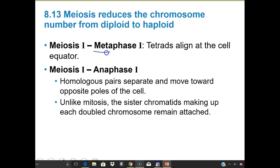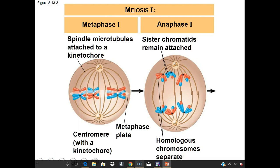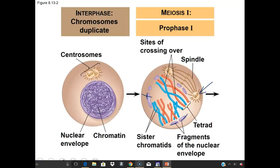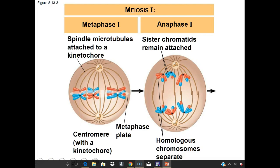In metaphase I, tetrads align at the cell equator. In anaphase I, homologous pairs separate and move towards opposite poles. Unlike mitosis, the sister chromatids making up each double chromosome remain attached. Notice that crossing over occurs between pairs of homologous chromosomes during prophase I, so by the time we reach metaphase and anaphase, little pieces have been exchanged — the whole point is increasing genetic variation.